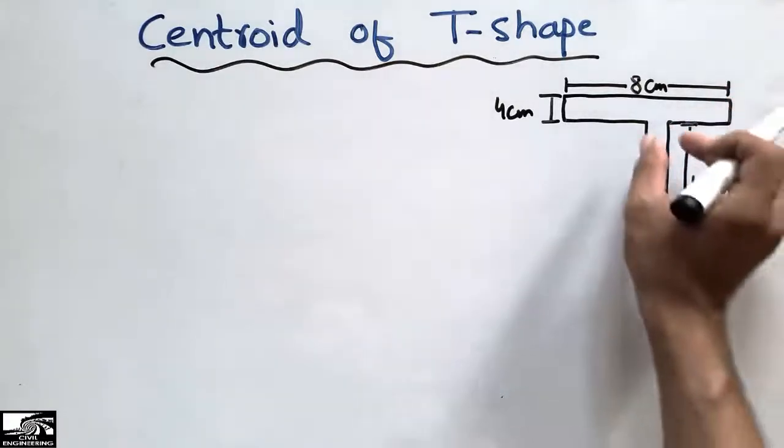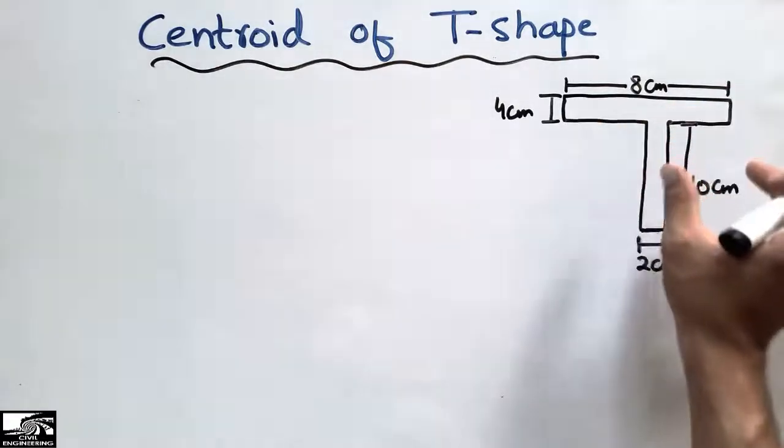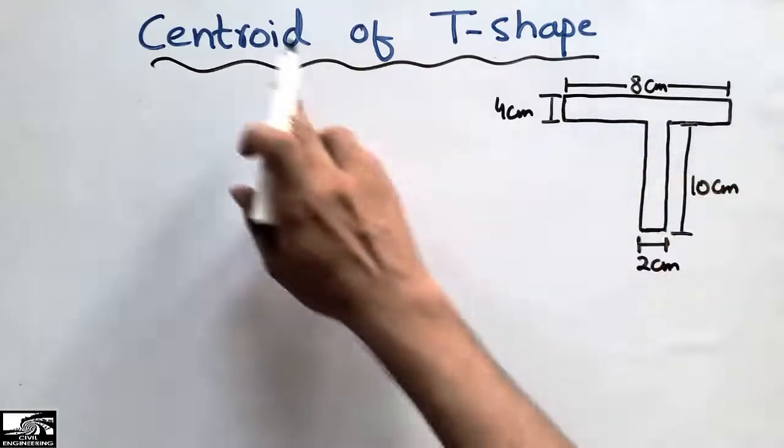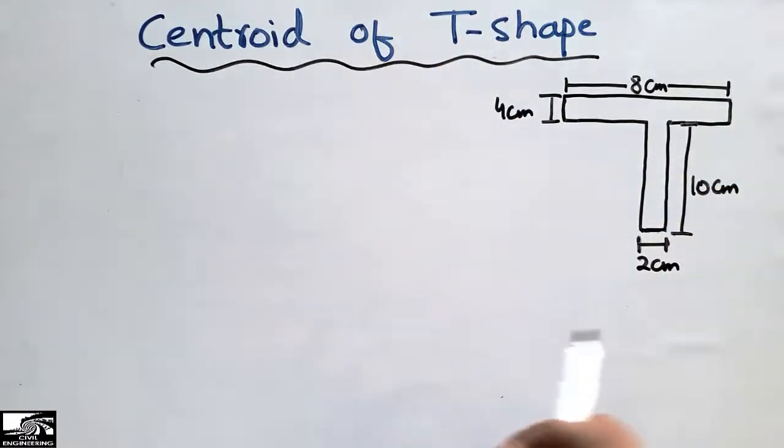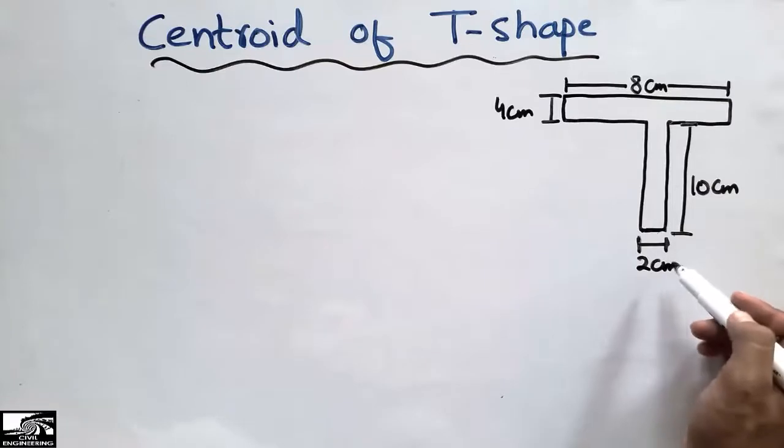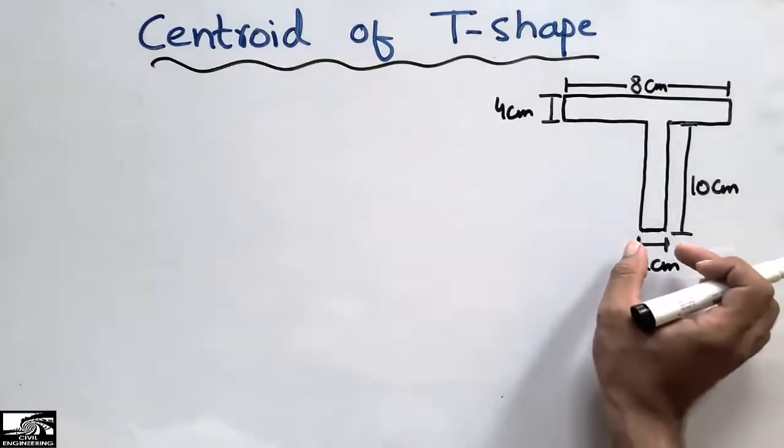One flange and one web, so it's a T-shape and we're interested to find the centroid of this T-shape. These are the dimensions given to us: 2 centimeter is the thickness here at the base.